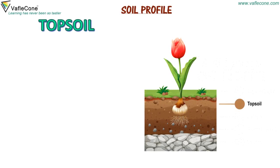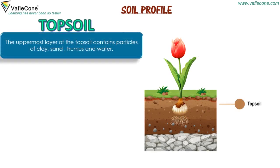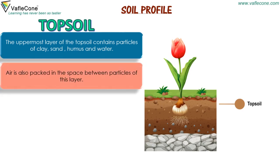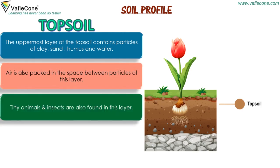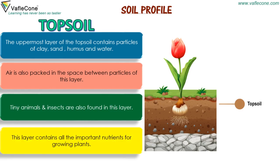Soil Profile. Topsoil: The uppermost layer of the topsoil contains particles of clay, sand, humus and water. Air is also packed in the space between particles of this layer. Tiny animals and insects are also found in this layer. This layer contains all the important nutrients for growing plants.